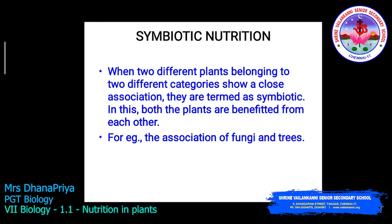Symbiotic nutrition occurs when two different plants belonging to two different categories show a close association; they are termed symbiotic. In this relationship, both plants benefit from each other. For example, the association of fungi and trees — you can see fungi on the bark of a tree — is a perfect example of symbiotic nutrition.